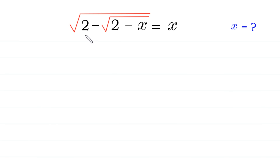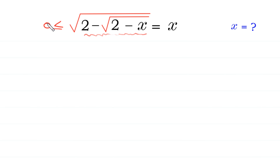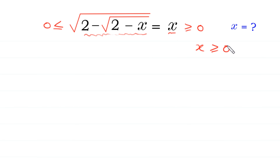Since the expression 2 minus square root of 2 minus x is under a radical sign, this expression must be greater than or equal to 0. And because of this, the right side of the equation — x — must be greater than or equal to 0.